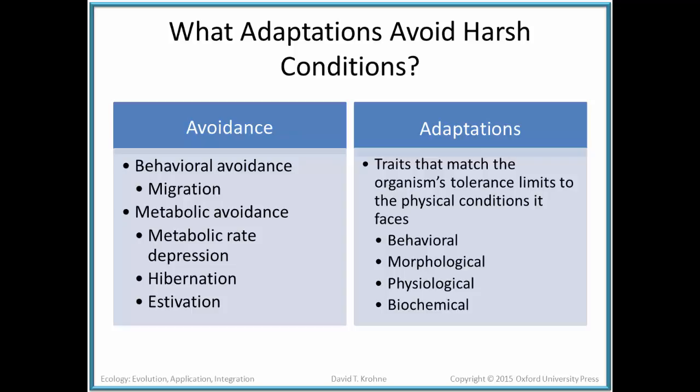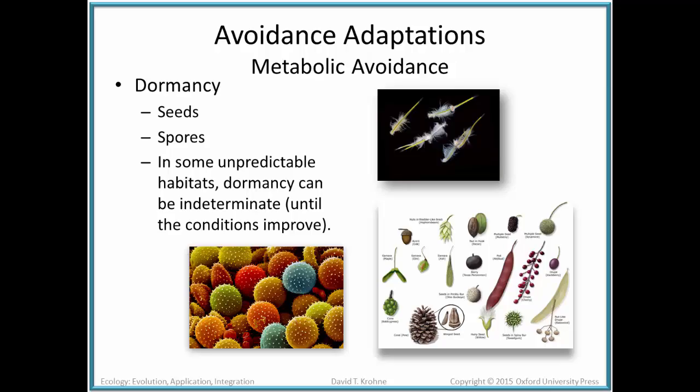Another way to approach this would be avoidance — to get out of the way of bad conditions. This might be accomplished by migration, by movement, that is behavioral avoidance, or by metabolic avoidance, where you change physiology or metabolic rates. We'll talk about hibernation and estivation in particular as ways to escape or avoid harsh conditions.